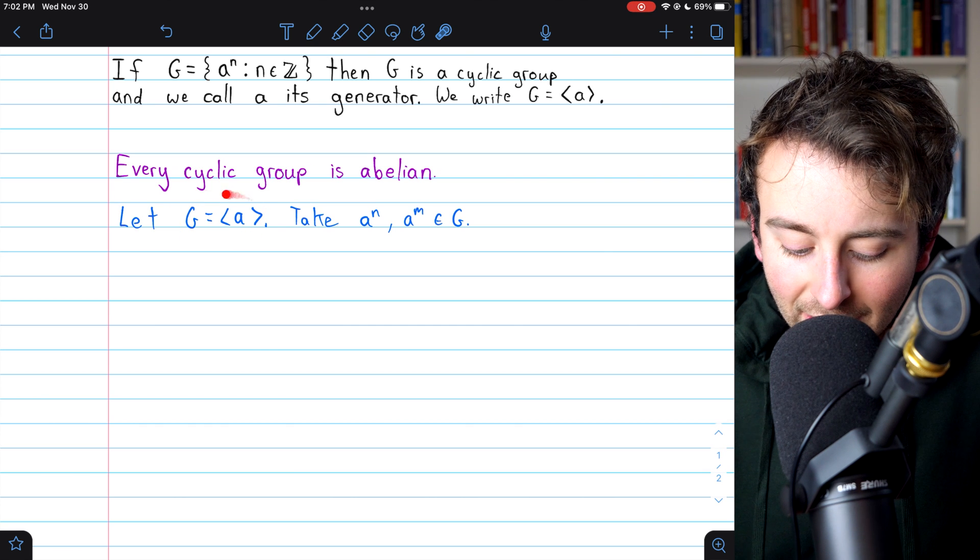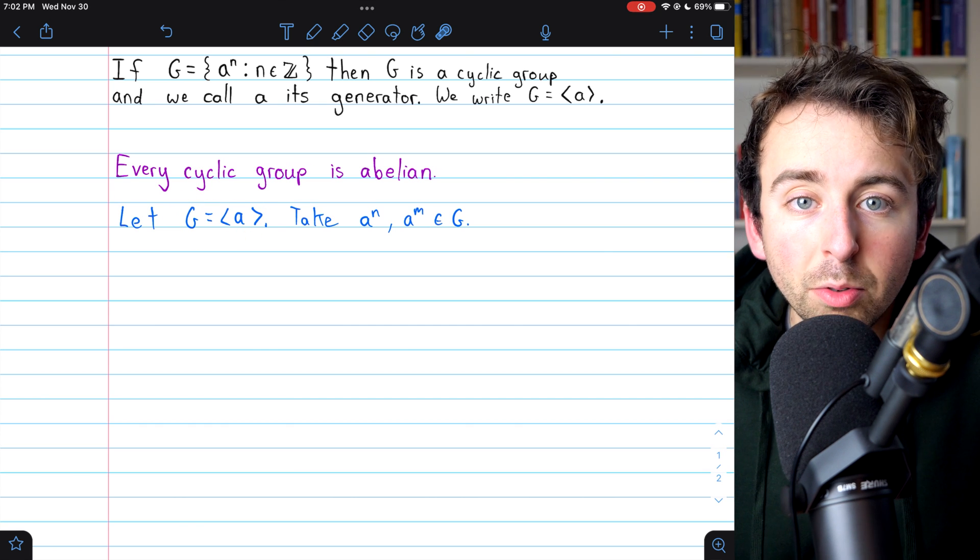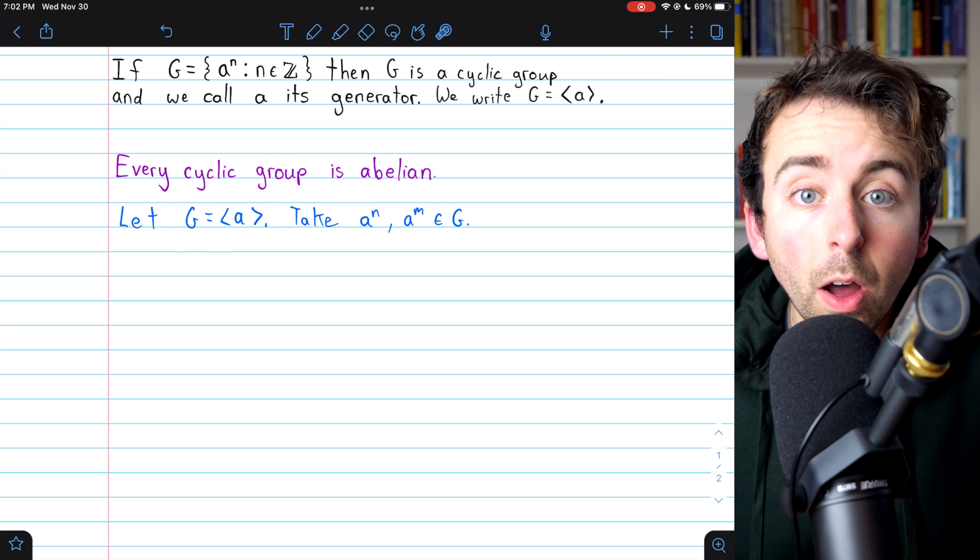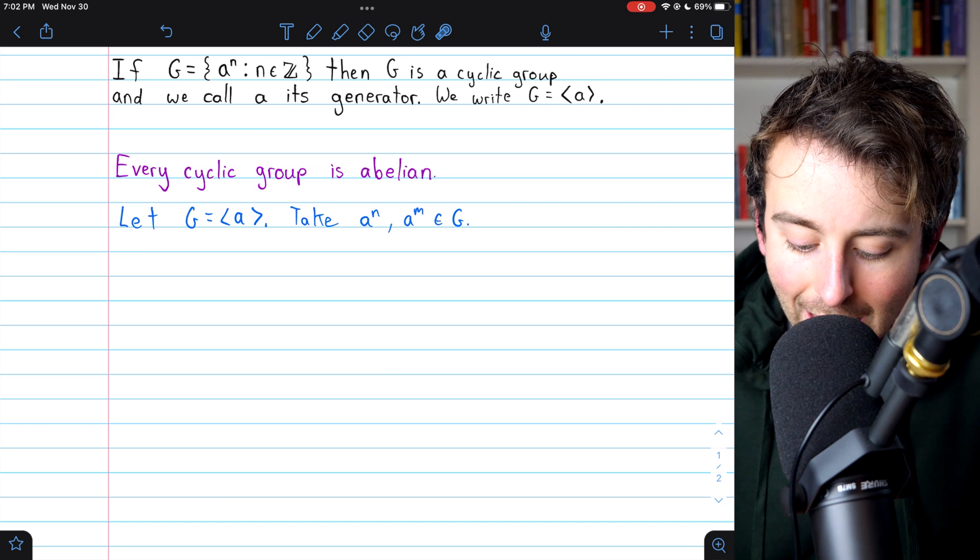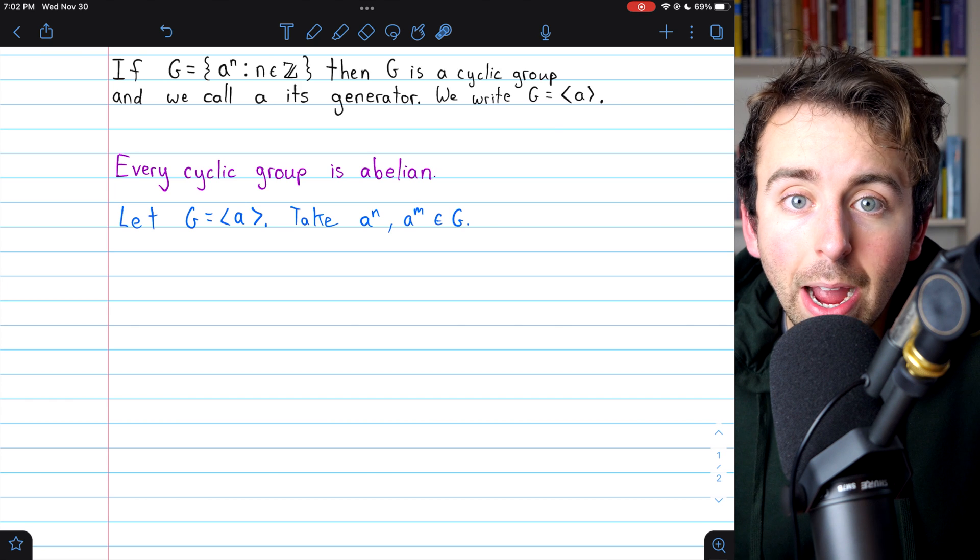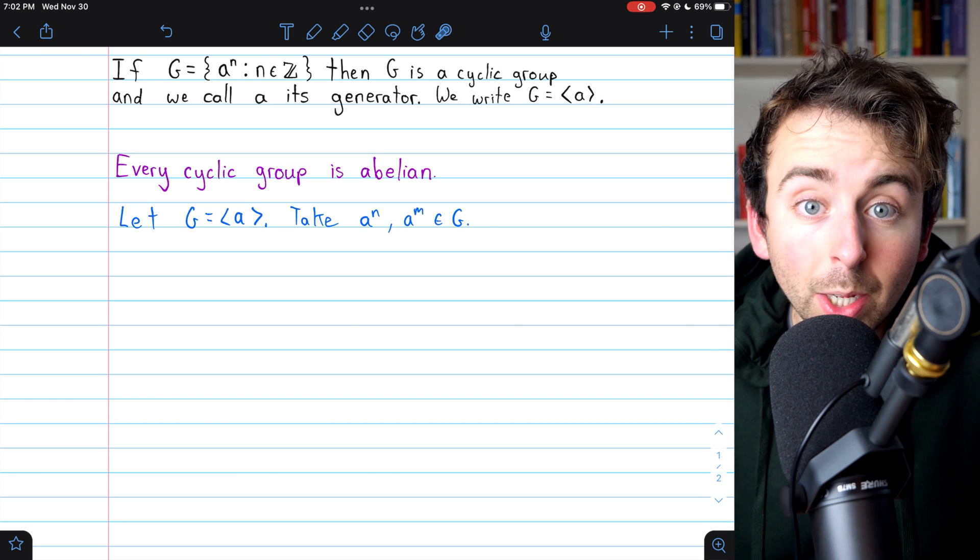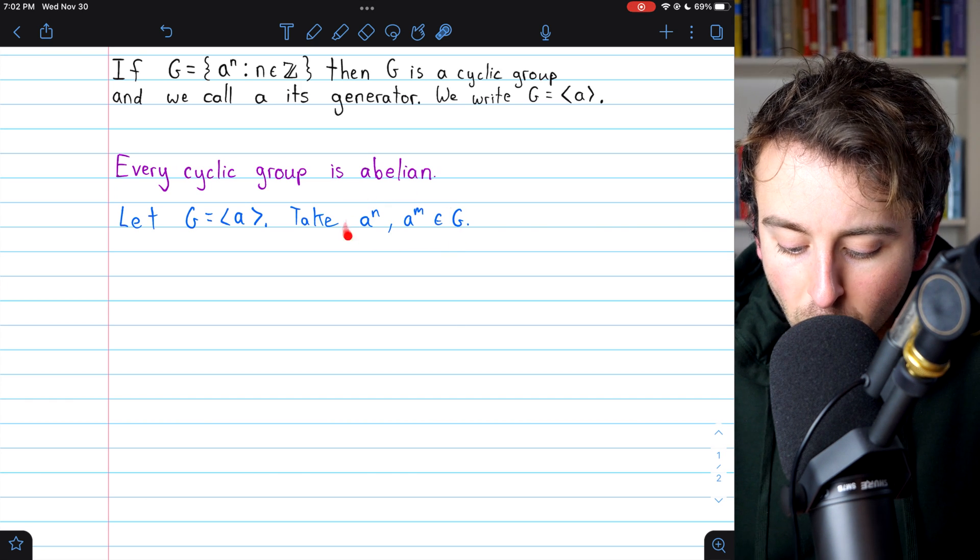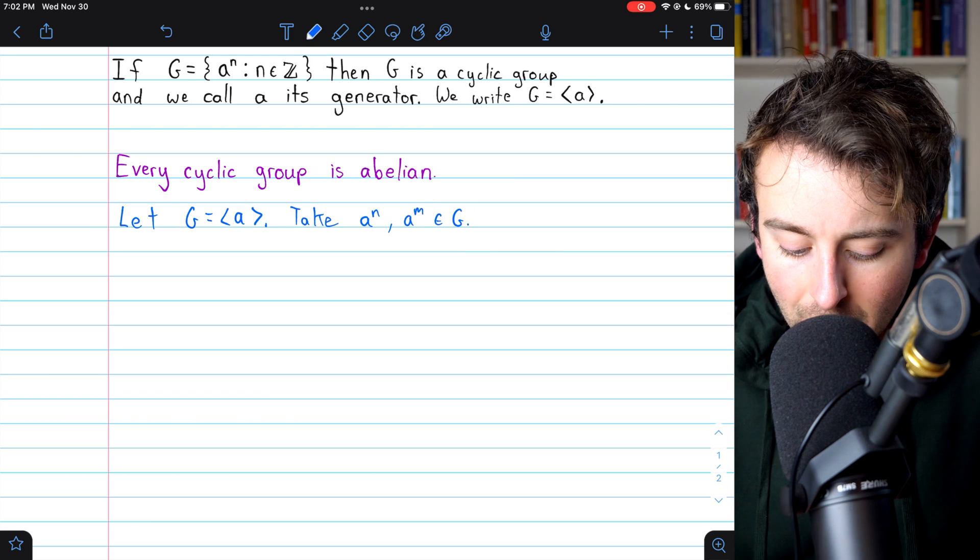So we just say let G be the cyclic group generated by A. So that means that G is made up of all integer powers of A. So then to take two arbitrary elements from our cyclic group G, that's just taking two arbitrary powers of A from our cyclic group G.